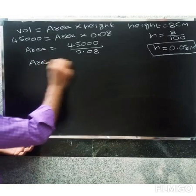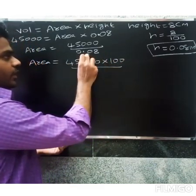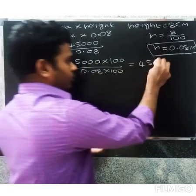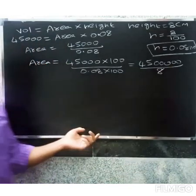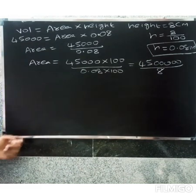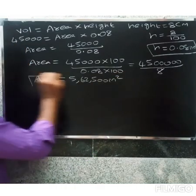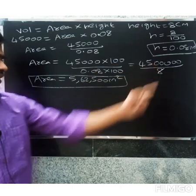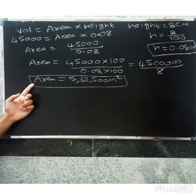Calculating: 45,000 divided by 0.08. Multiply both by 100: 45,00,000 divided by 8 equals 5,62,500 square meters. So the area equals 5 lakhs 62 thousand 500 square meters, which is 562,500 square meters.